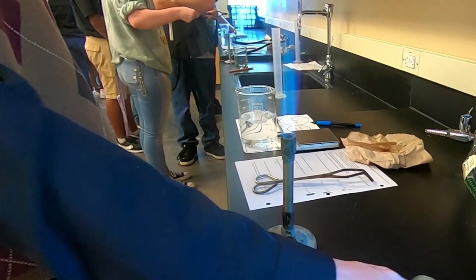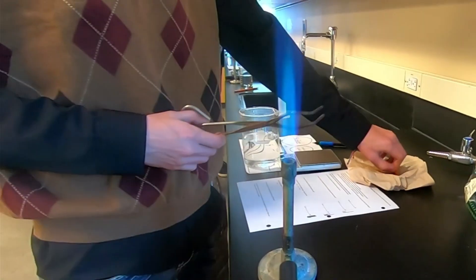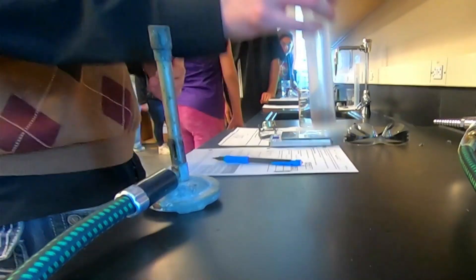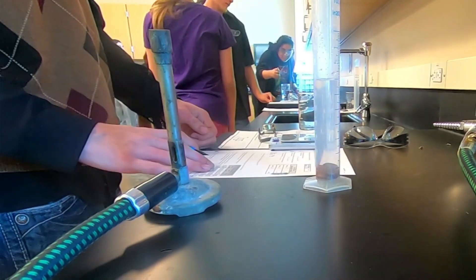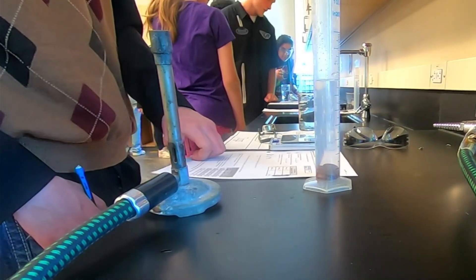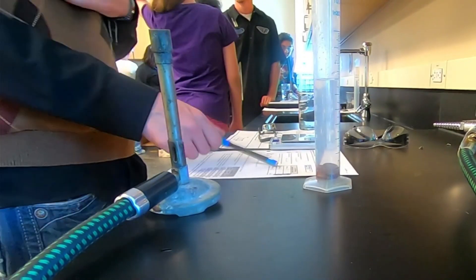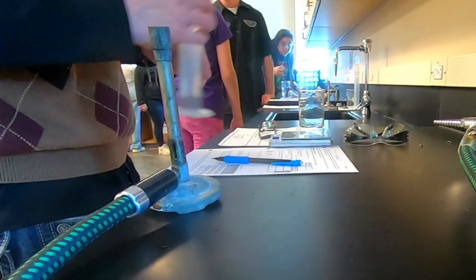Then we took our initial volume. You can see the student is taking the initial and final volume of the pennies in the graduated cylinder. The initial volume we had in our graduated cylinder was 70.0 milliliters, and then our final volume was 73.2.